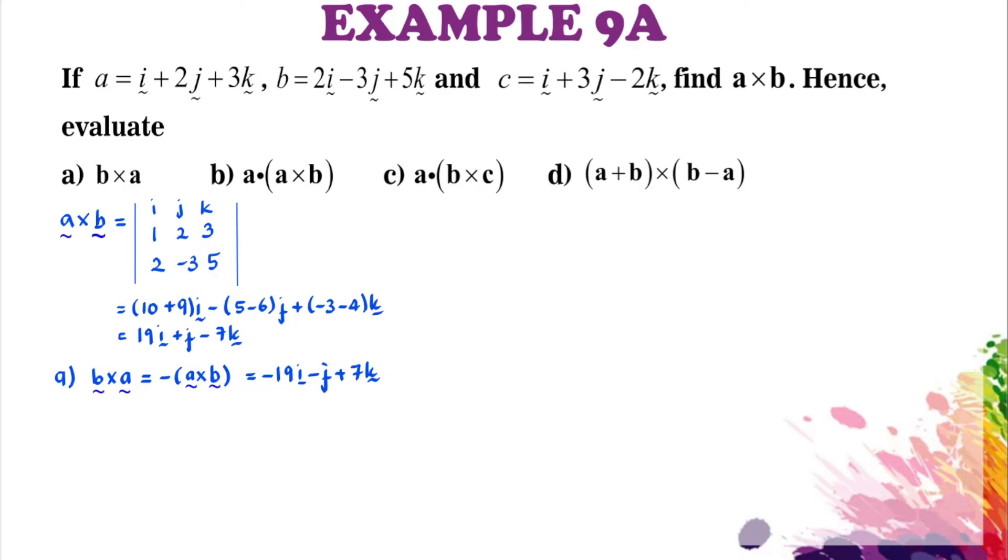Part B: A dot A cross B. By property number 6 we can simplify it to be A cross A dot with B. And by property number 1 we know that A cross A equals zero. So zero dot B literally gives us zero.